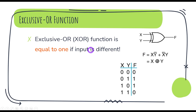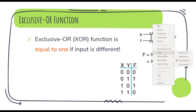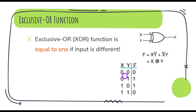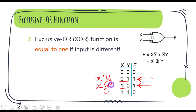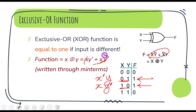Remember the XOR function: when the inputs are the same, the result is zero; when the inputs are different, the result is one. We can also write the min terms from this truth table. For min terms, you look at the ones: for a row where X is zero, you write X prime, and where Y is one, you write Y. So the expression is X'Y + XY'.